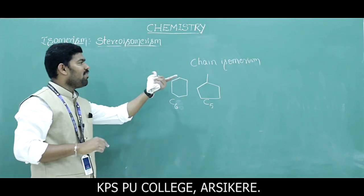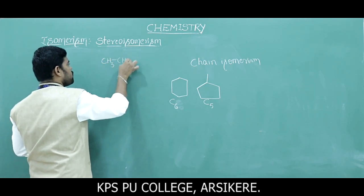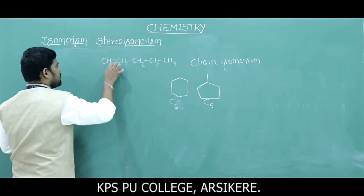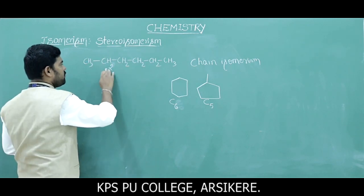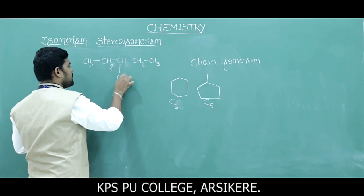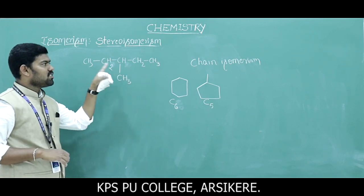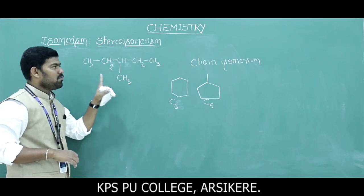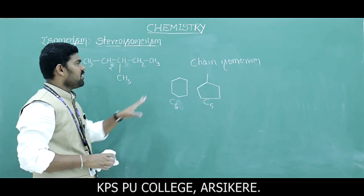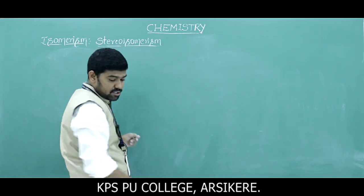So comparing these two compounds: one has a 6-membered parent chain and another has a 5-carbon parent chain with one substituent attached. This is chain isomerism — the parent chain is different between the two structures. This information is also useful for competitive examinations.